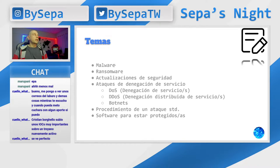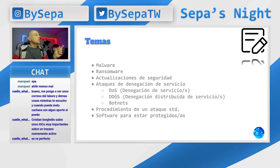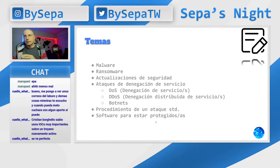Los temas de hoy: vamos a ver qué es un malware, qué es un ransomware. Actualización en seguridad, orientado a malware y ransomware. Ataques de negación de servicio, que se está hablando mucho y muchas empresas lo están sufriendo. Vamos a explicar la diferencia entre DoS y DDoS, qué son las botnets y el procedimiento de un ataque estándar. Y software para estar protegido, orientado a los usuarios, no a las empresas.